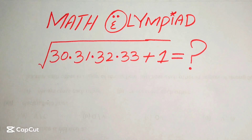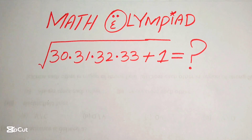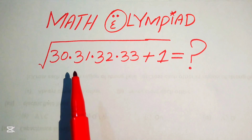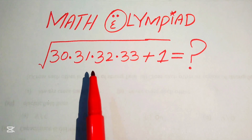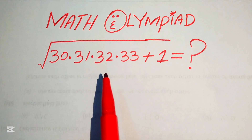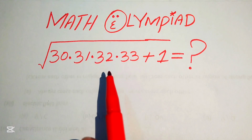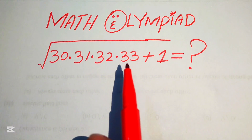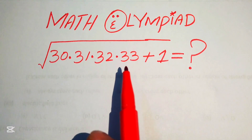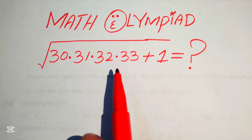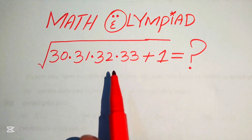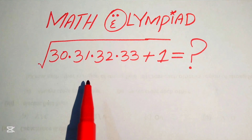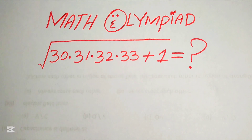Hello everyone, welcome! We are going to solve this nice algebra problem. We have 30 times 31 times 32 times 33, plus 1, and we need to find the square root of this number.